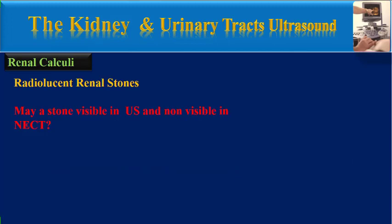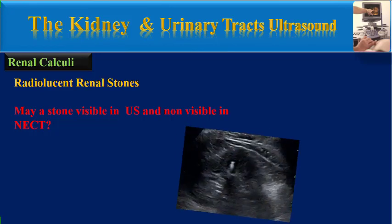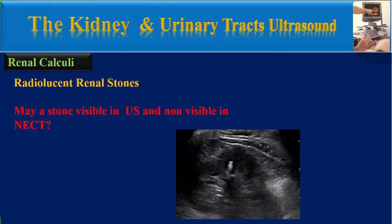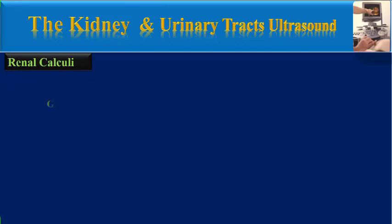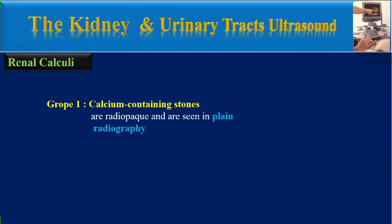In this video, I am going to speak about radiolucent renal stones and explain why a stone may be visible in all three imaging modalities and non-visible in non-enhanced CT. Generally, we can classify renal stones into two groups: group one, calcium-containing stones which are radio-opaque and are seen in plain radiography, and group two, radiolucent renal stones.